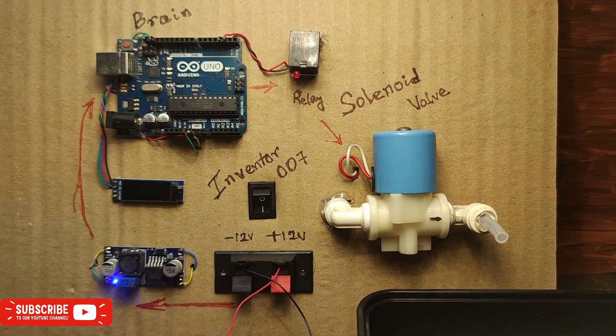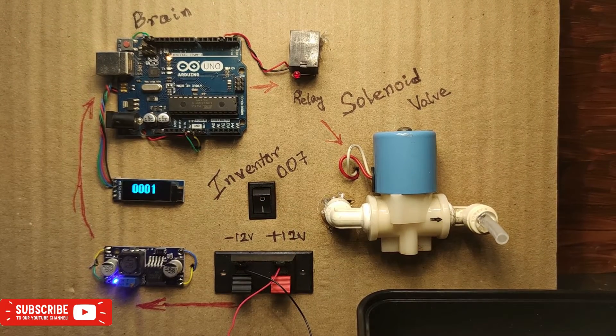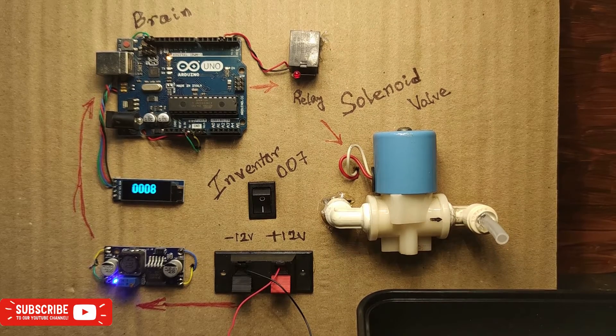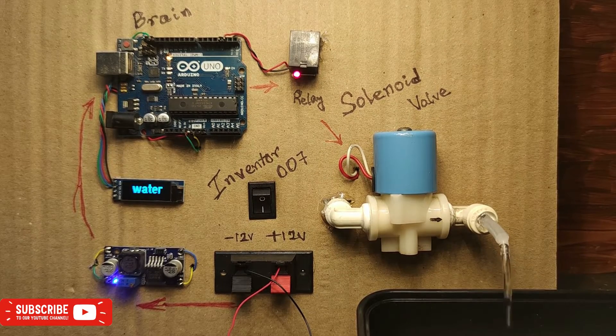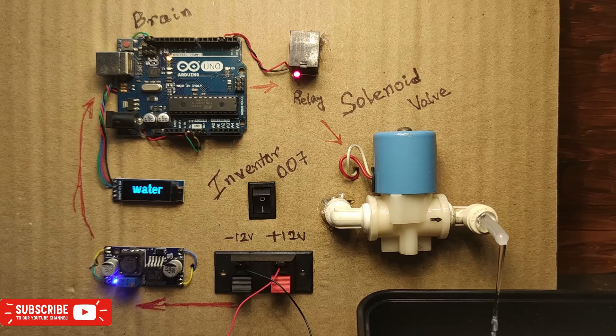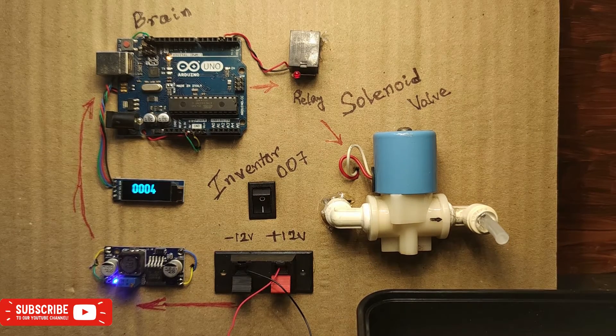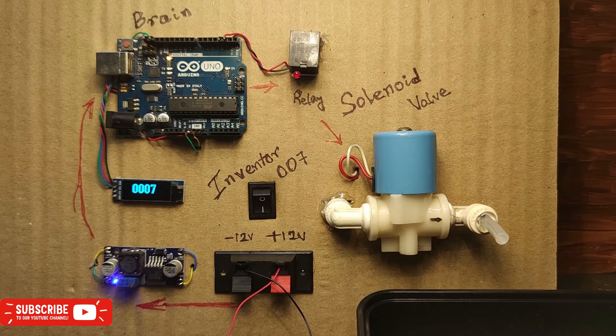So in this system I have put only 10-second delay. You can put any amount as per your requirement. Here you can see the relay got activated, which in turn opened the solenoid valve. That's why the water is flowing. And again it got shut down after certain time.